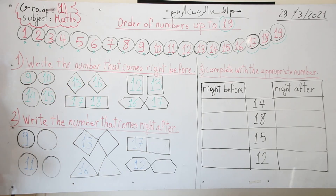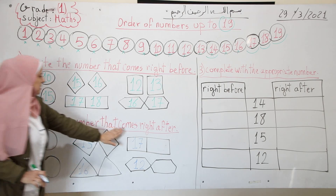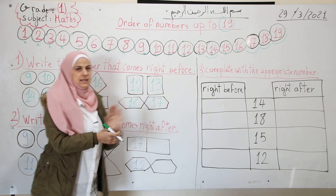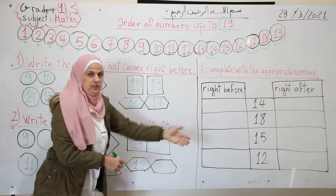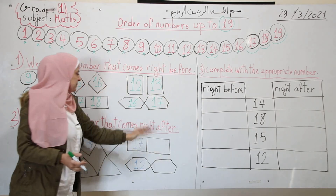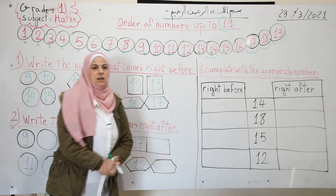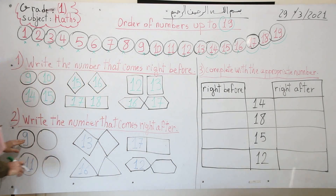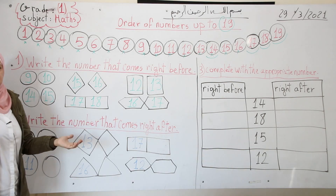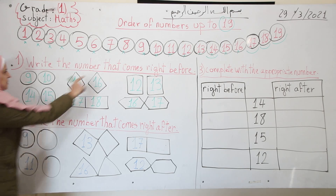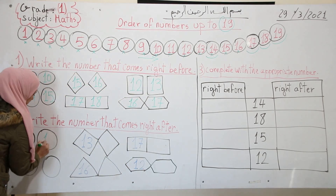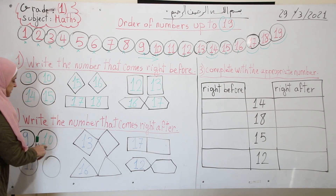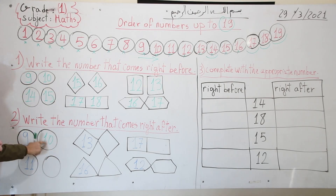Exercise 2: write the number that comes right after. We did 'before' — now we write the number that comes right after. After 9: I look at the number line, 9 then 10, so the number that comes right after 9 is 10. I write 10 in this circle — so now I have 9, 10.